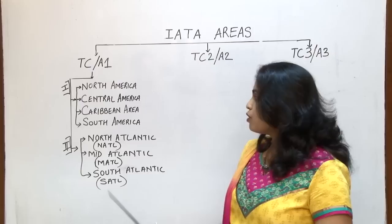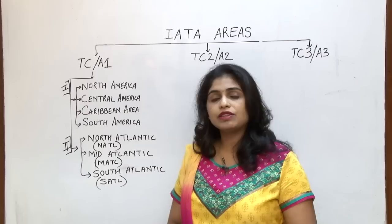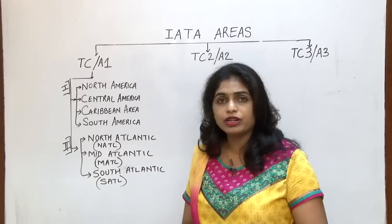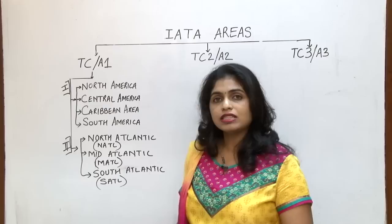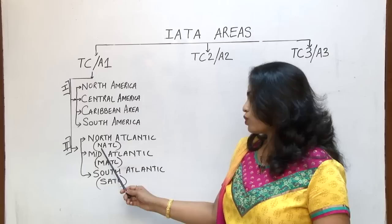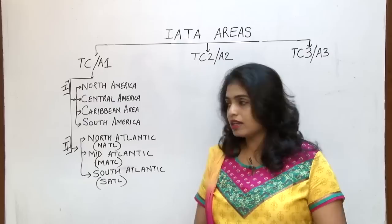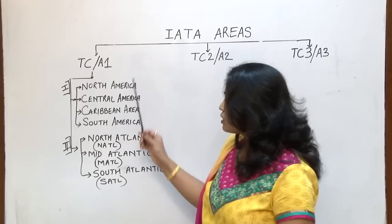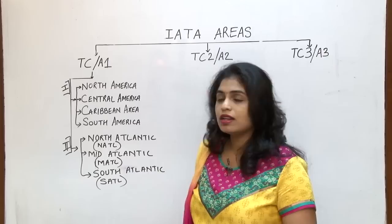In this first classification, IATA has divided the sub areas as per geographical points — that is, dividing as per continents or areas. In the second classification, it makes a straight cut of the surface — a northern region, middle region, and south region. So this will be North Atlantic (NATL), Mid-Atlantic (MATL), and South Atlantic (SATL). These are the sub areas of IATA area 1 under both classifications.